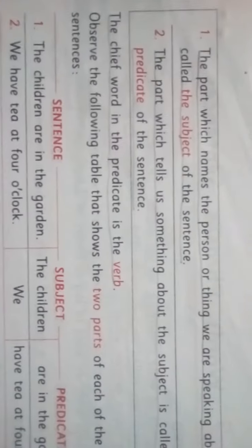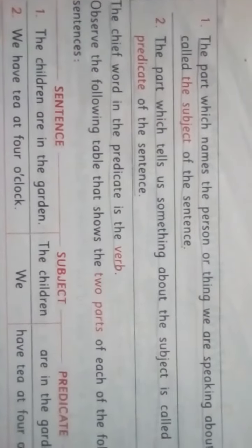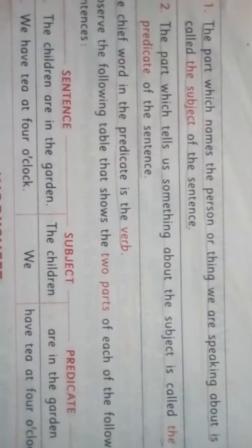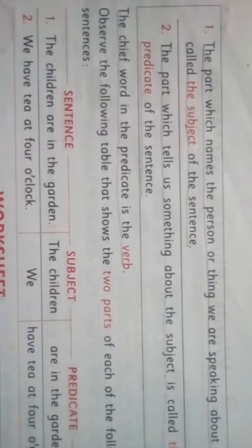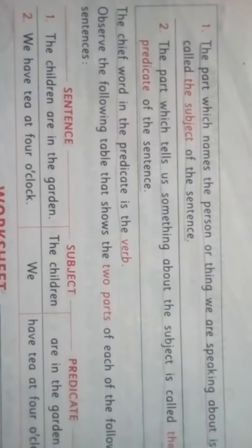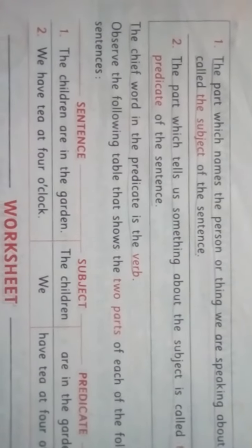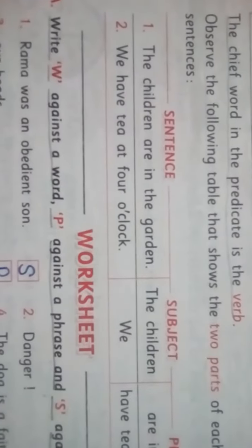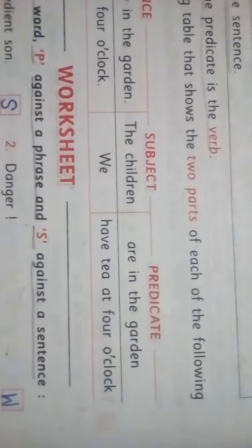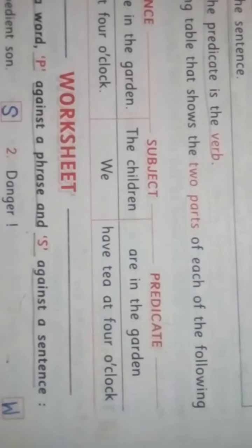Thus, the part which names the person or thing that we are speaking about is called the subject of the sentence. The part which tells us something about the subject is called the predicate of the sentence. For example, in the sentence 'The children are in the garden', the subject is 'the children' and the predicate is 'are in the garden'. In the sentence 'We have tea at four o'clock', the subject is 'we' and the predicate is 'have tea at four o'clock'.